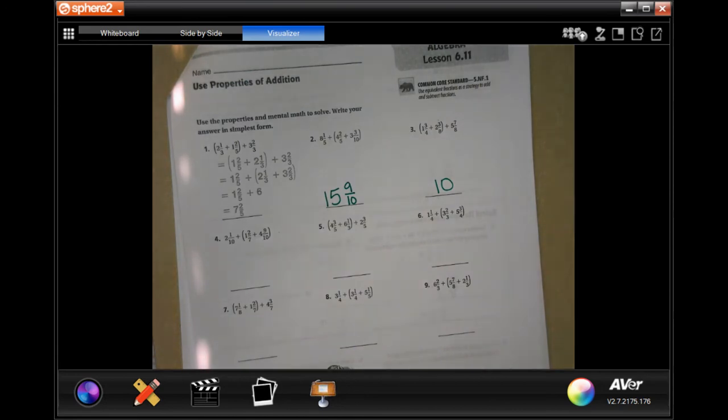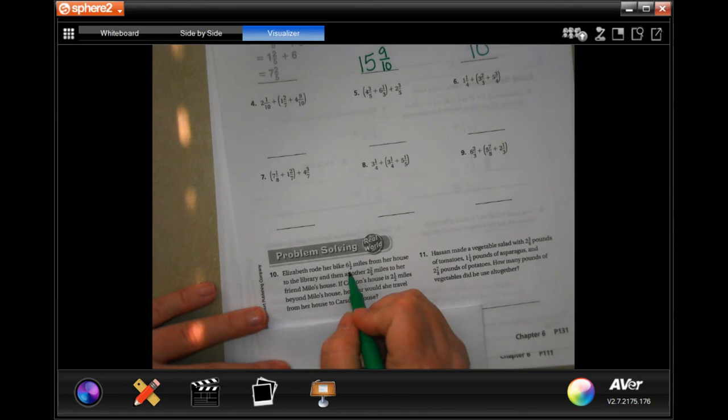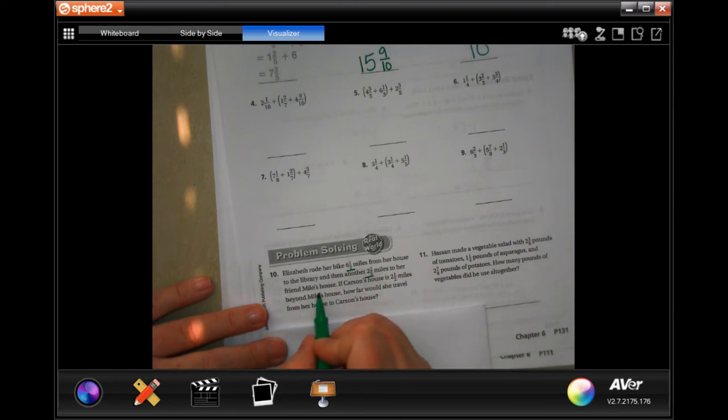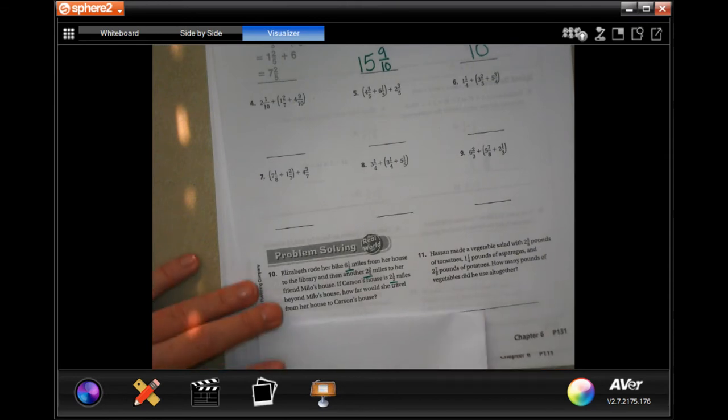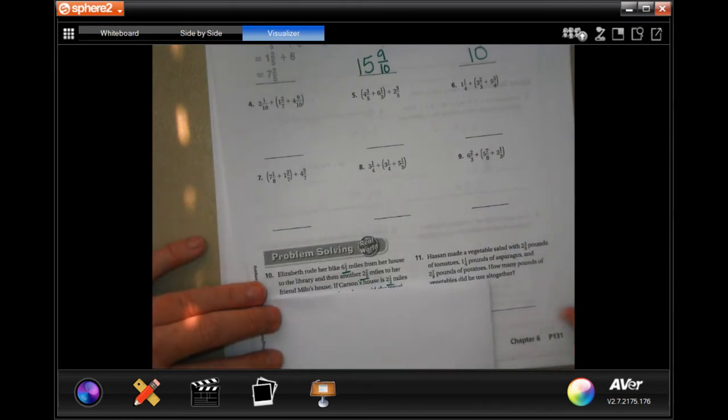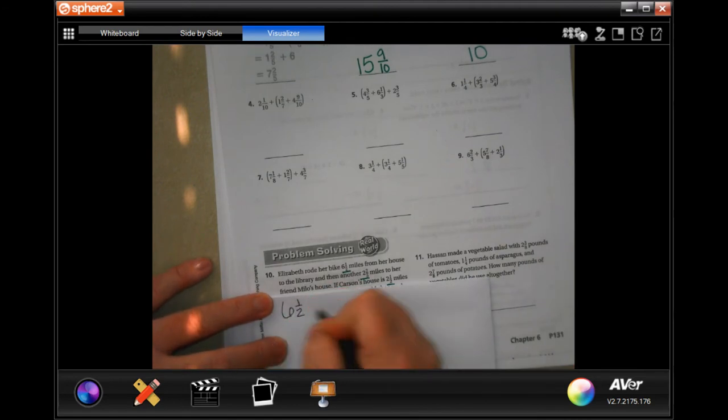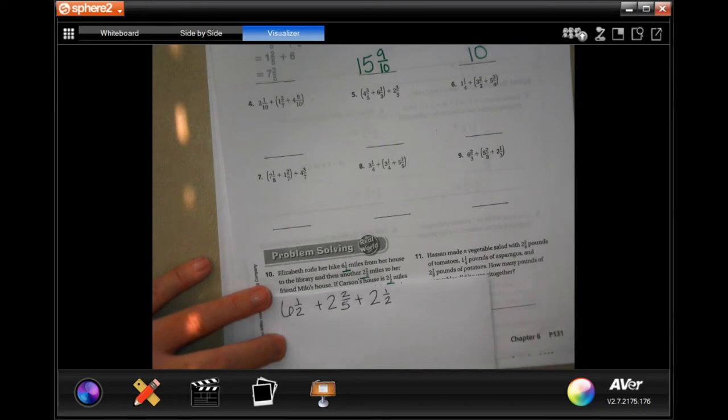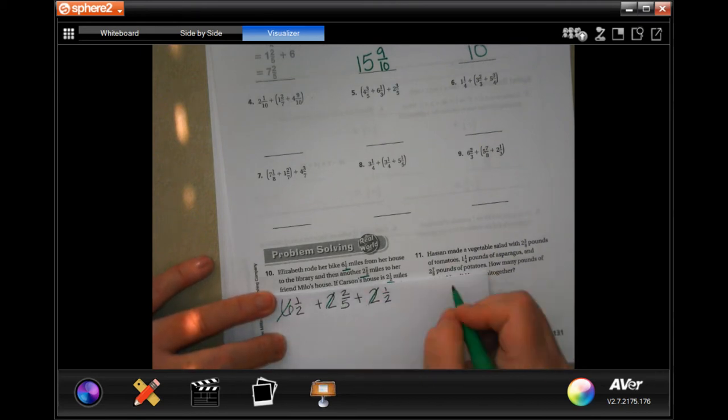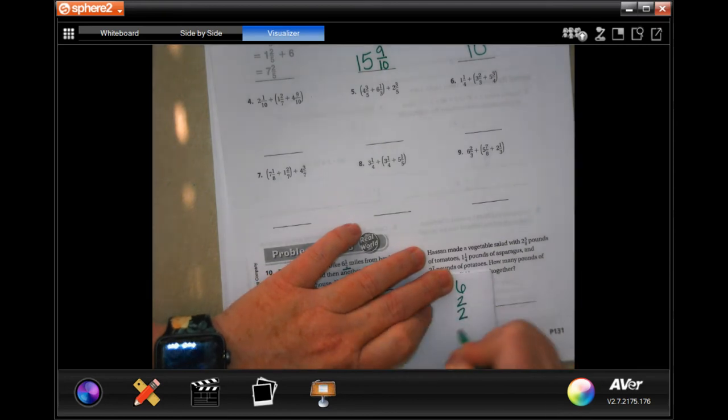You guys are going to keep doing that through number 9. We are going to start on number 10 together, and it says, Elizabeth rode her bike 6 and a half miles from her house to the library, then another 2 and 2 fifths miles from her friend Milo's house. If Carson's house is 2 and a half miles beyond Milo's house, how far will she travel from her house to Carson's house? So, 6 and a half plus 2 and 2 fifths plus 2 and a half.